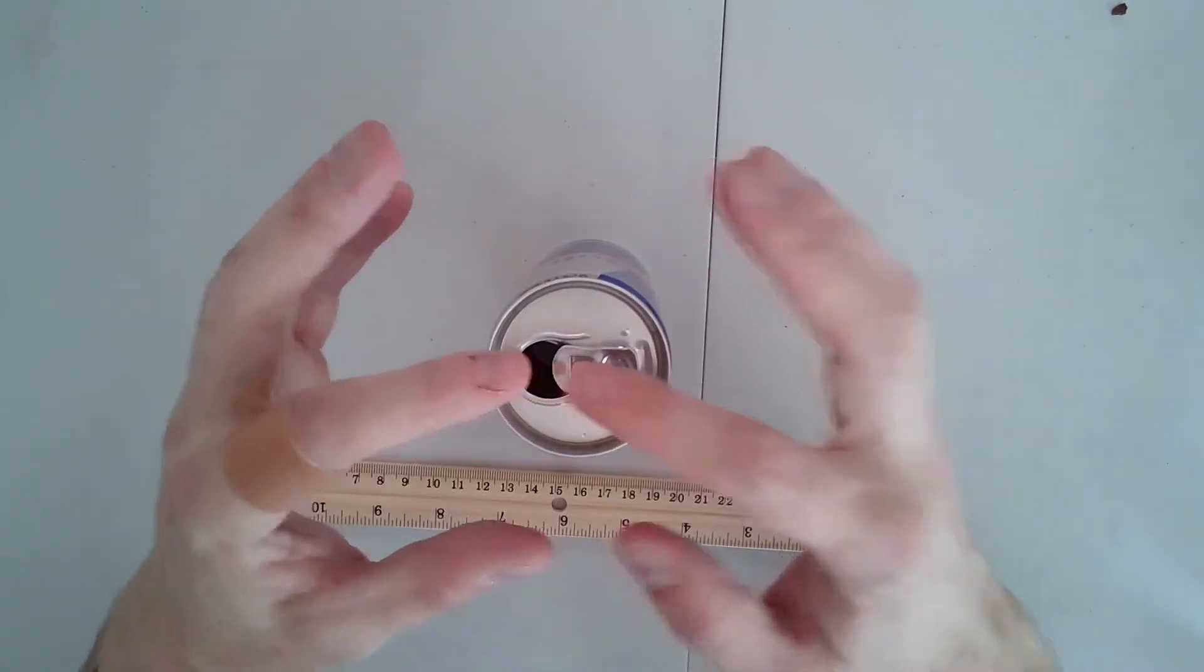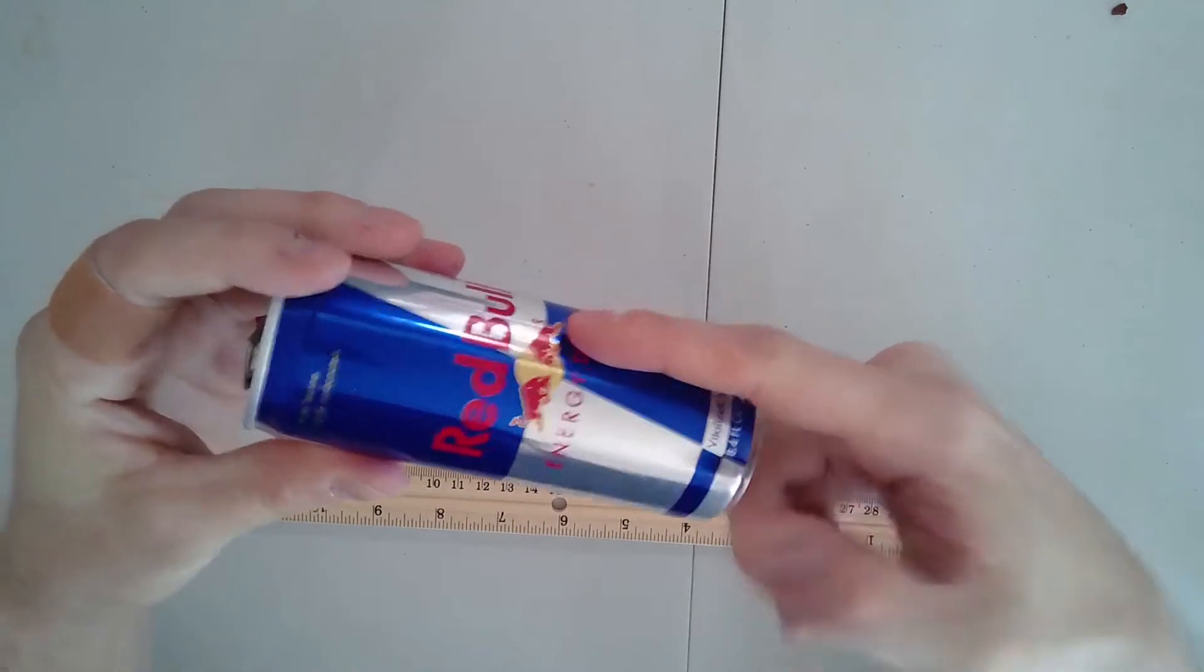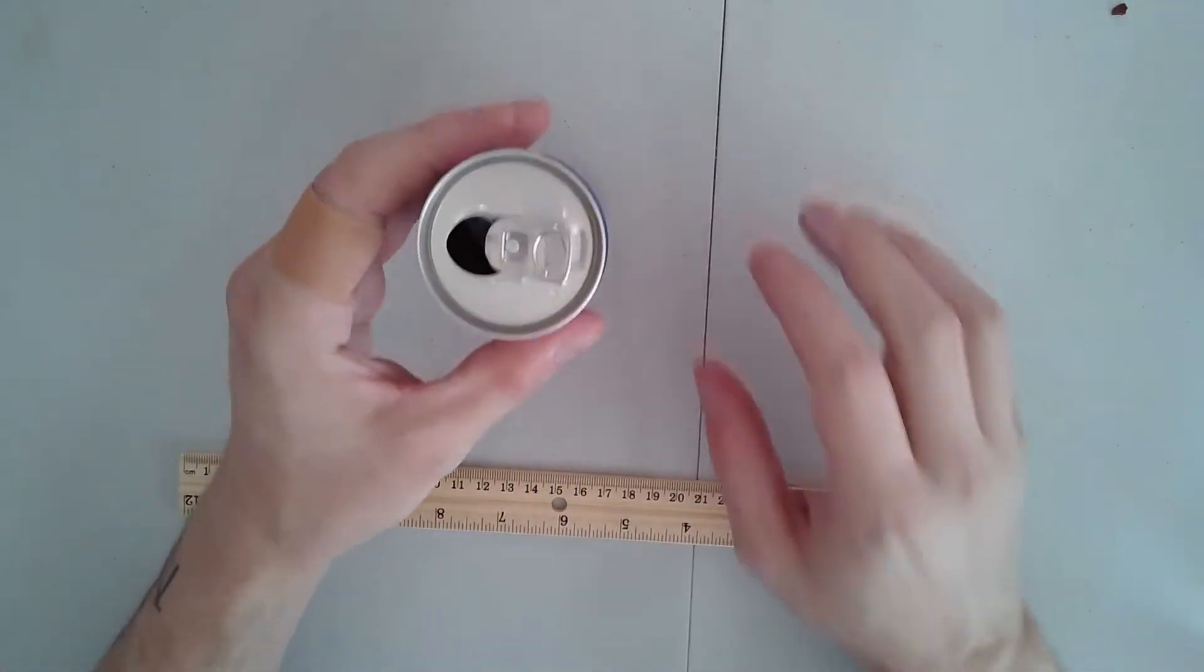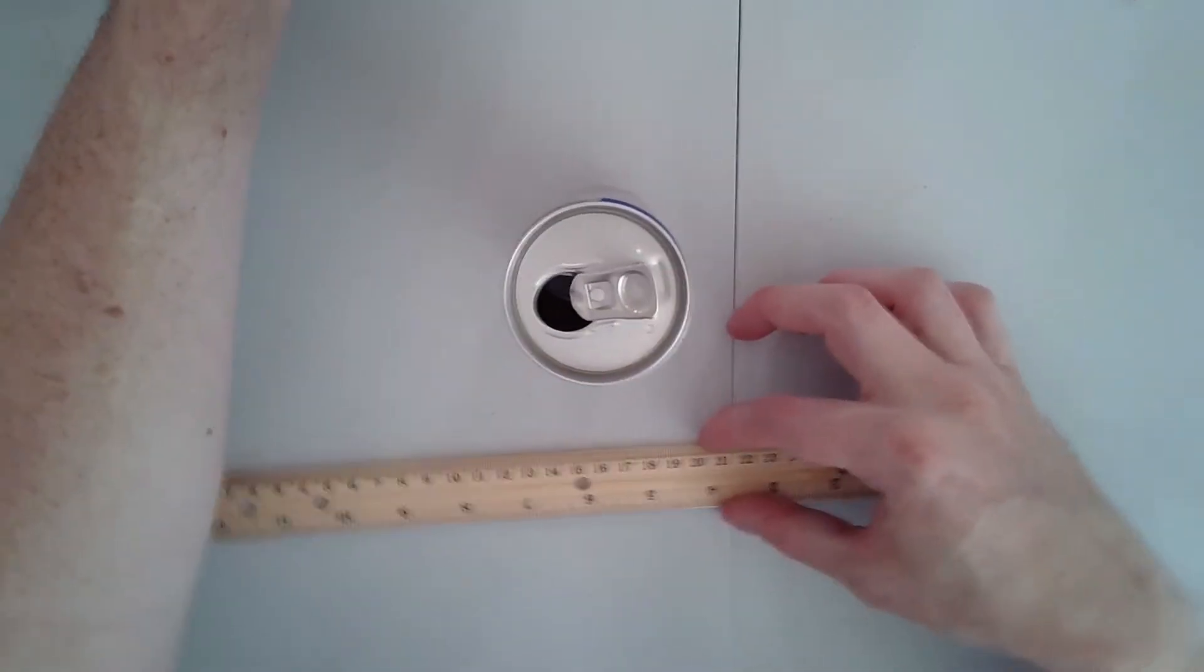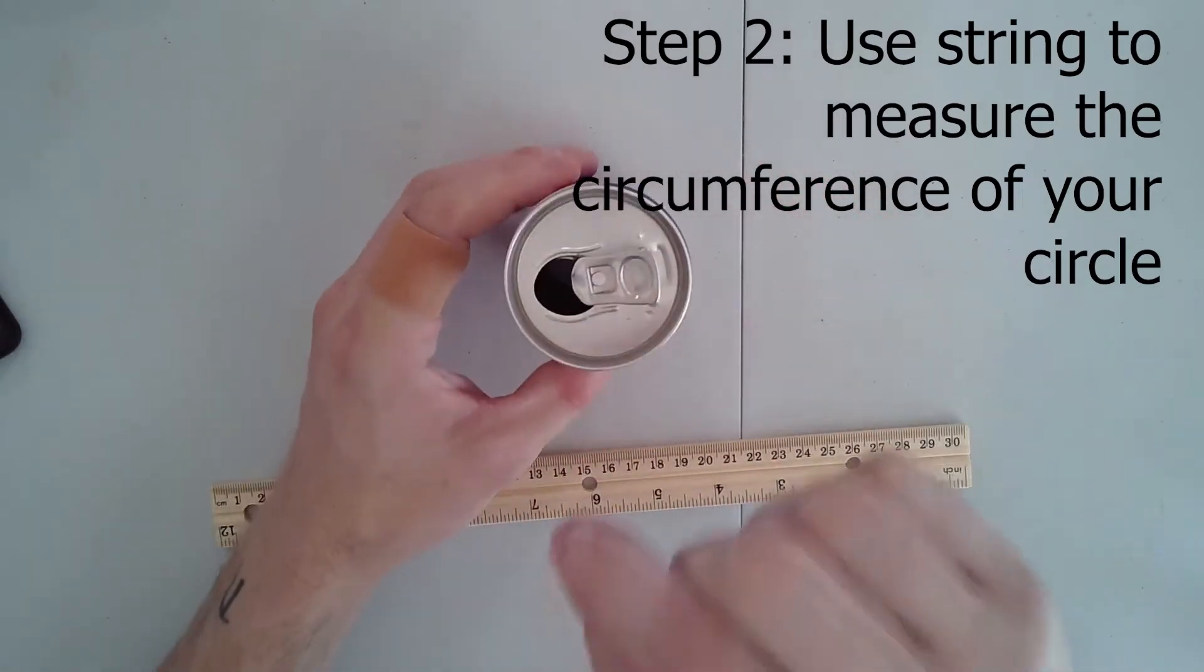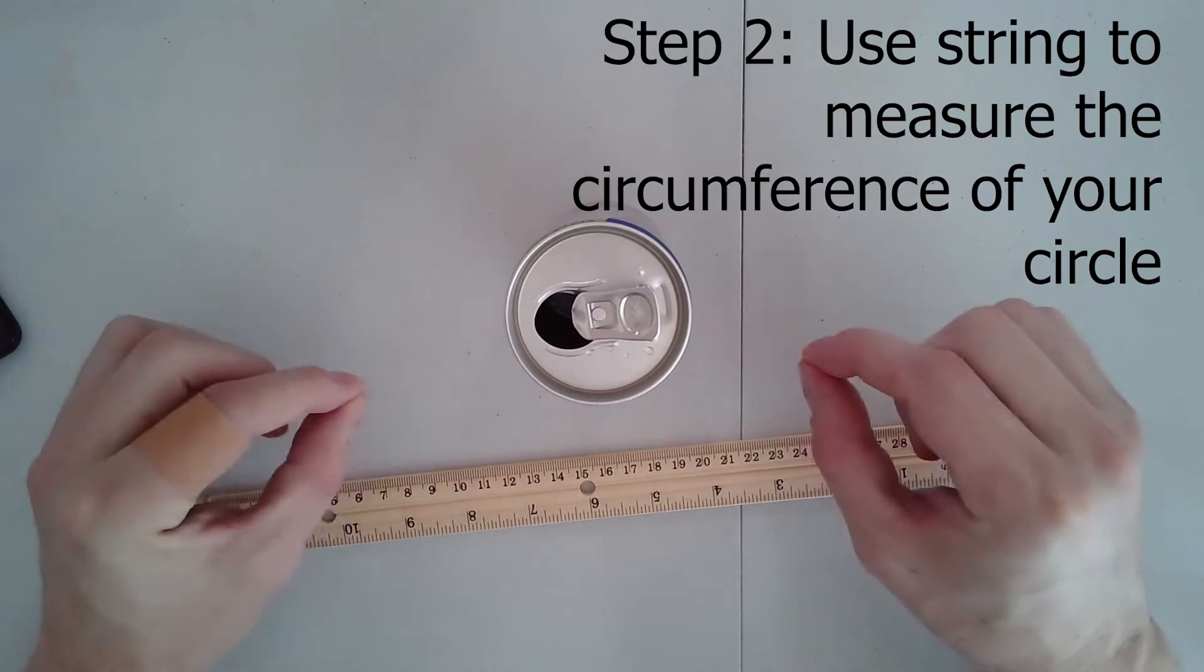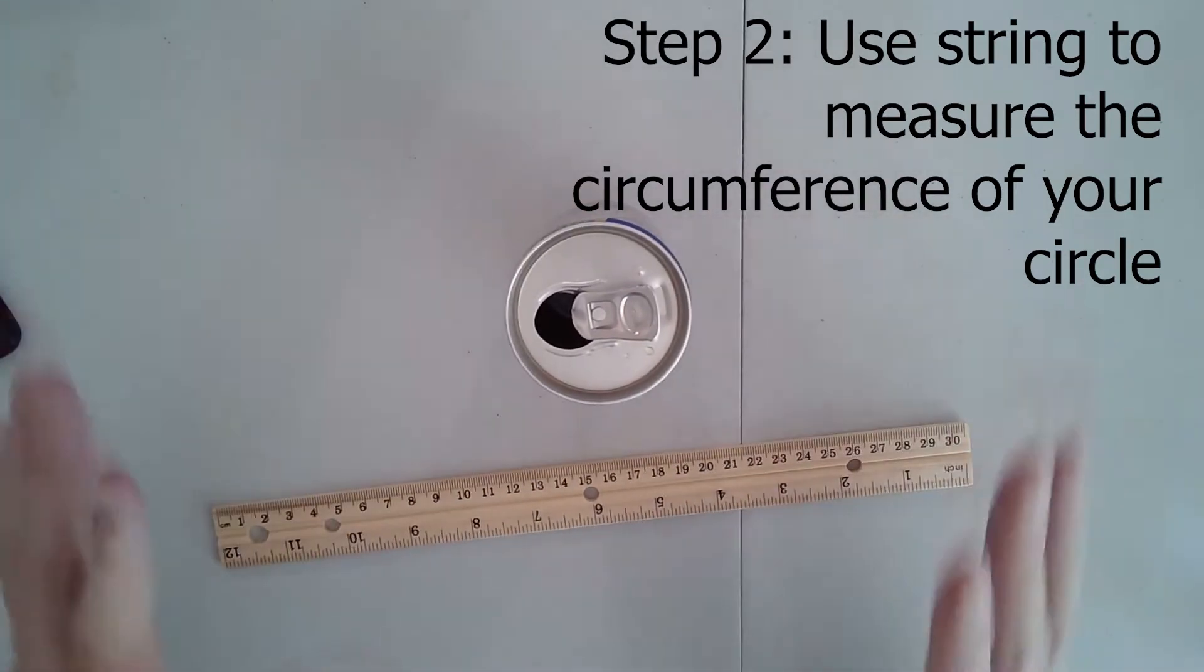So now that we know the diameter of this Red Bull can, we now need to know the circumference. We need to know the distance around the circle. Now, that's kind of tough to measure directly. So what we're going to do is we're going to use a piece of string to wrap around the can and then pull that string out and measure it.